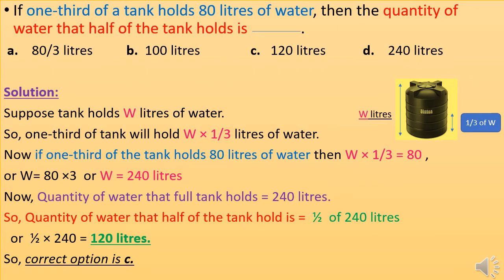If one third of a tank holds 80 liters of water, then what quantity of water does half of the tank hold? Suppose the tank holds W liters of water. One third of the tank holds W × (1/3) liters. If one third of the tank holds 80 liters, then W × (1/3) = 80, so W = 80 × 3 = 240 liters. The quantity of water that half the tank holds is (1/2) × 240 = 120 liters.